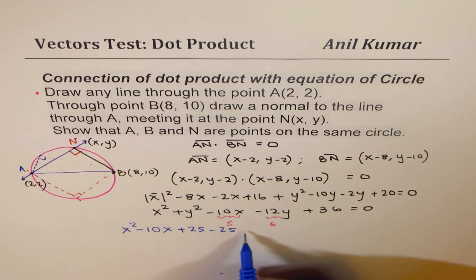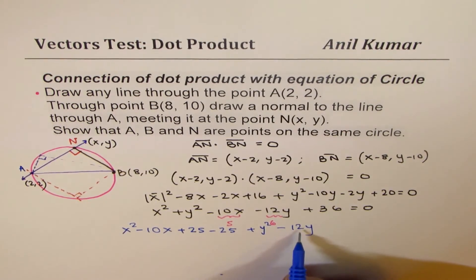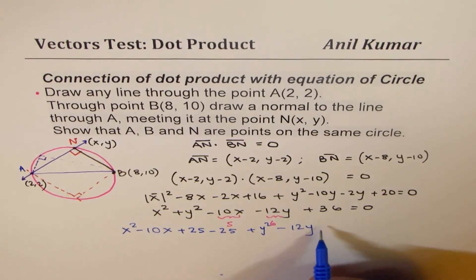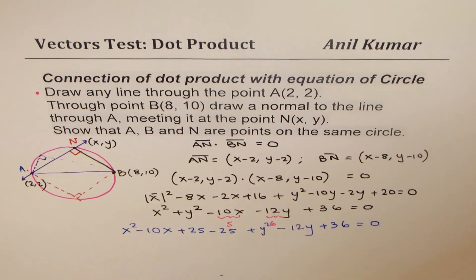On the other hand, with the Y units, we say Y squared minus 12Y. Half of 12 is 6. 6 squared is 36. We already have 36 here. So we'll just keep this 36 as such.